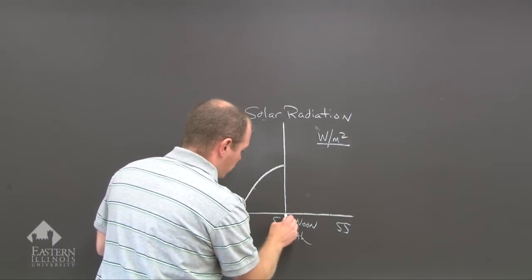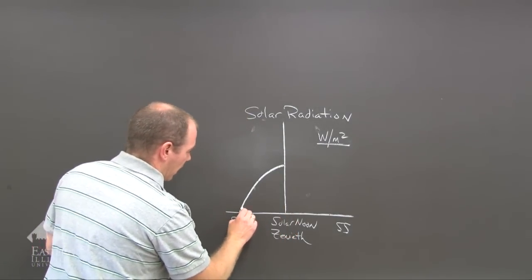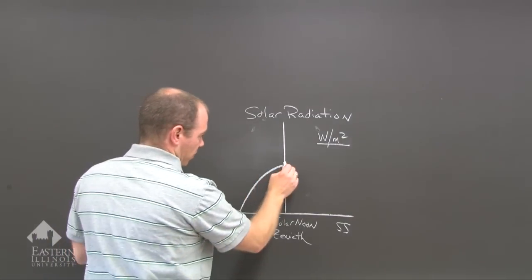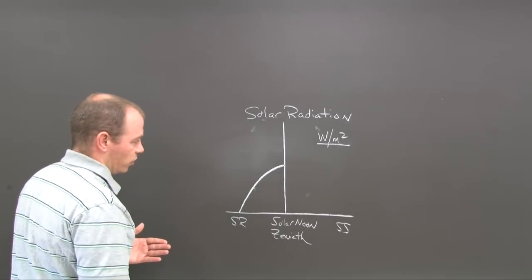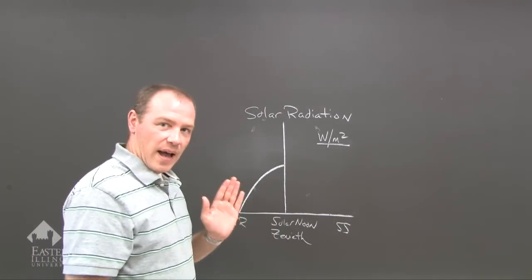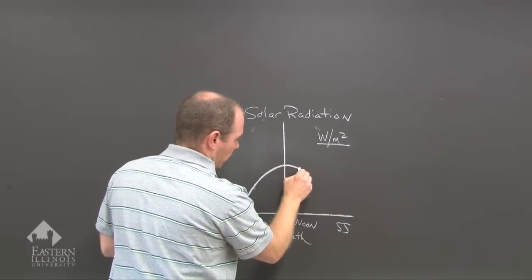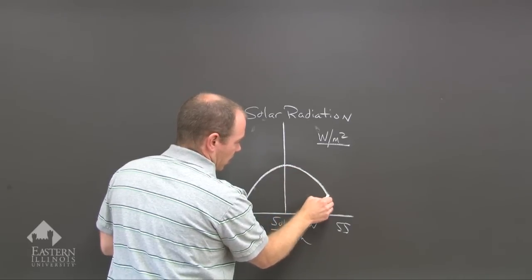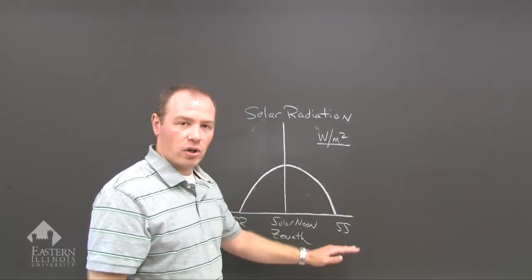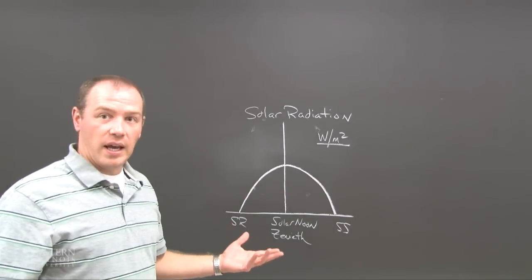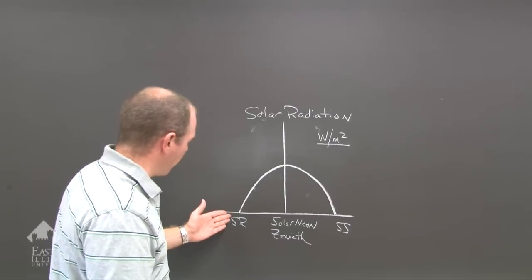So in the morning, from sunrise to solar noon, we have a nice slope to solar noon, as long as it's clear outside. Once the sun passes solar noon, the solar radiation also decreases to sunset. And what we get is a nice curve,